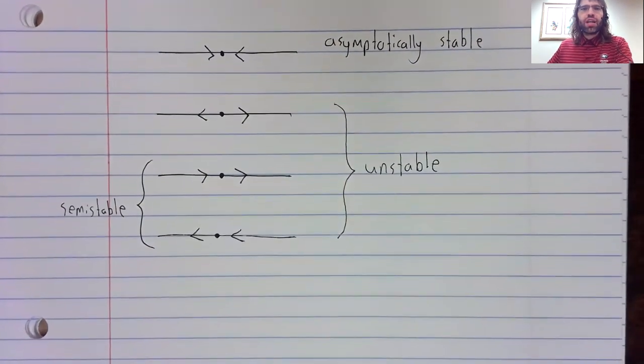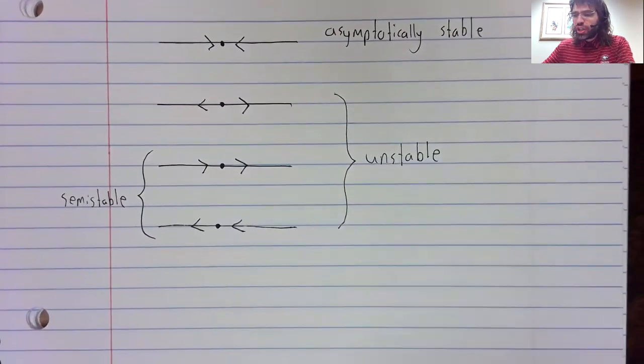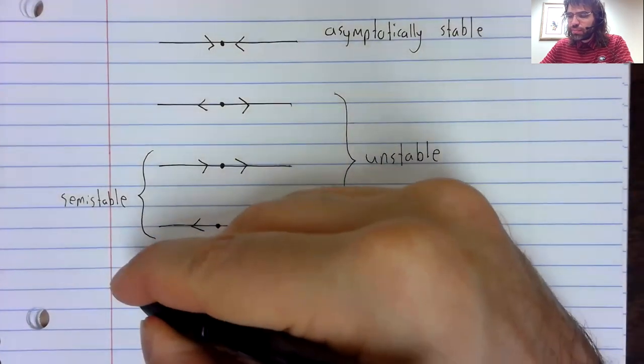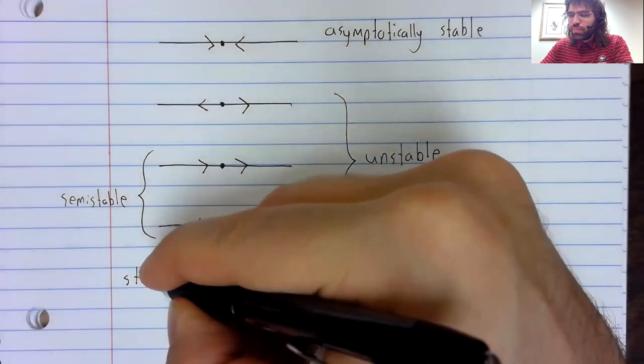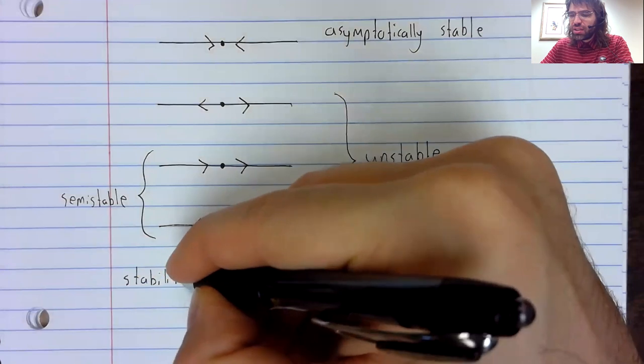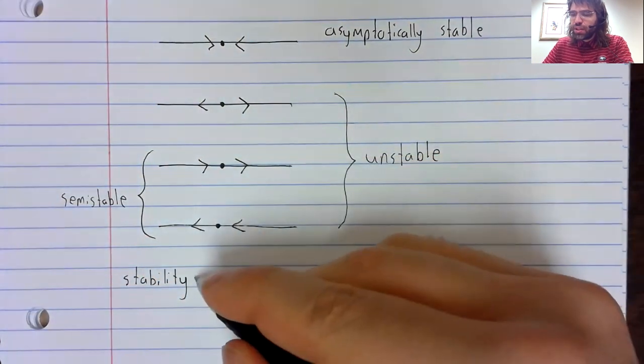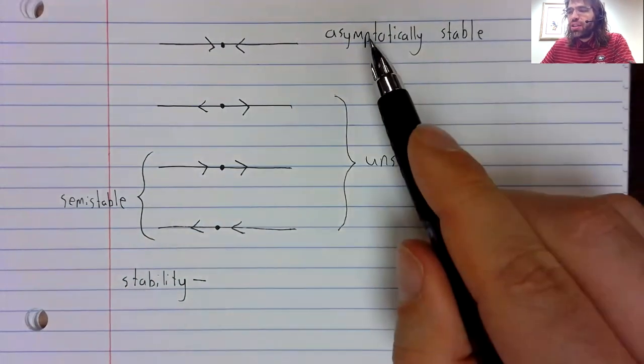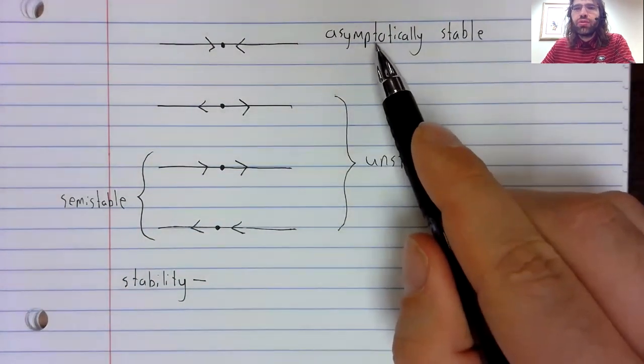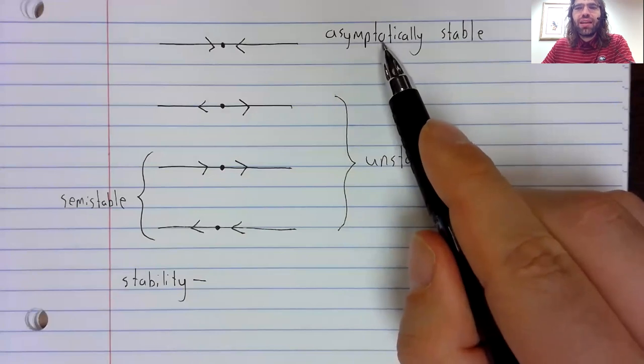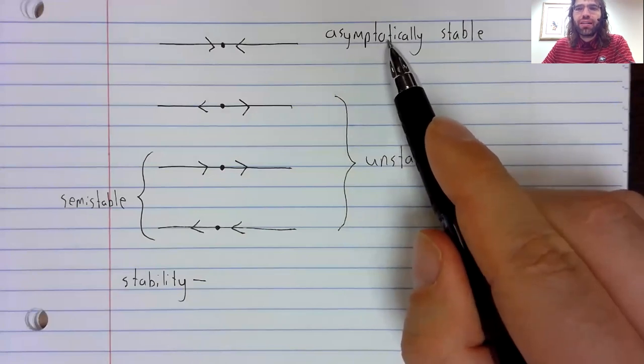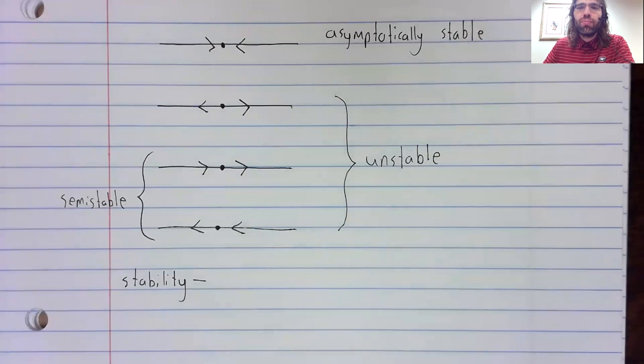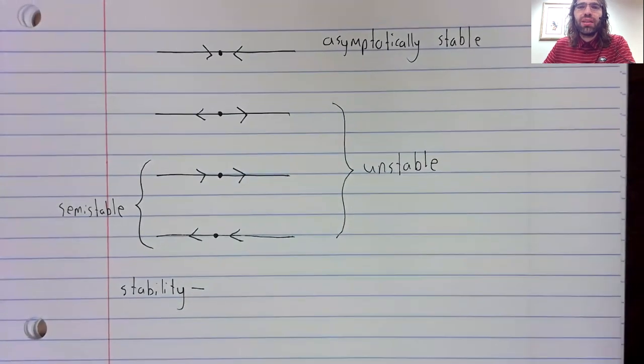I suppose I should at least mention stability, if no other reason than to make it clear that you really do need to say asymptotically stable, if that's what you mean.